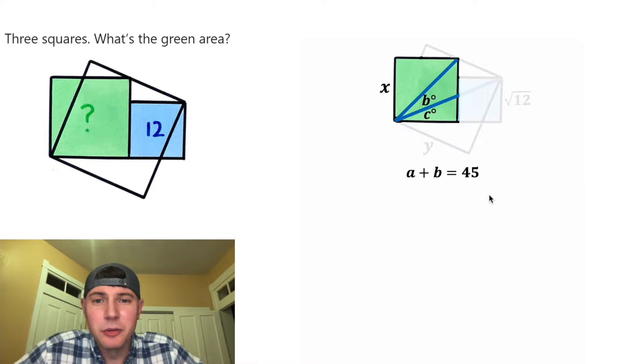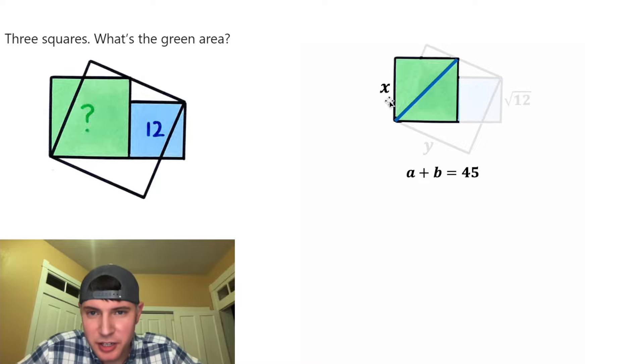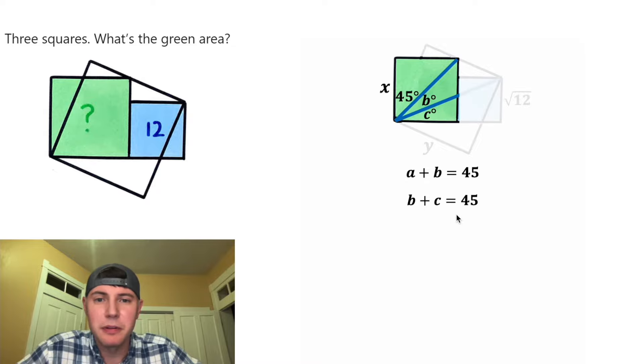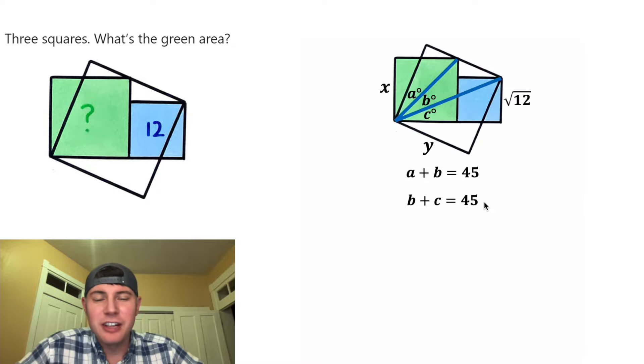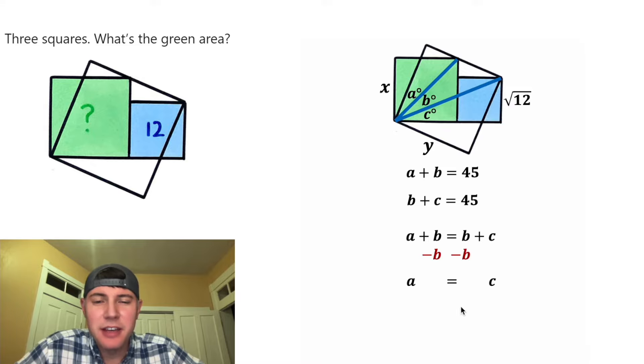And we can do something similar with B and C. This diagonal cuts the green square into two pieces, which cuts this 90 degree angle to a 45 and 45, which means B plus C is going to be equal to 45. So now let's look at our equations. Both of these are equal to 45, so we can set them equal to each other. And if we subtract B from both sides, we end up with A is equal to C.